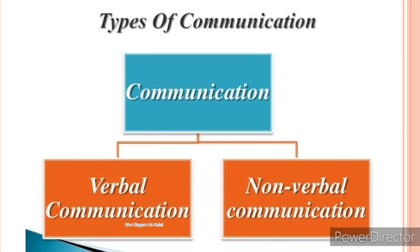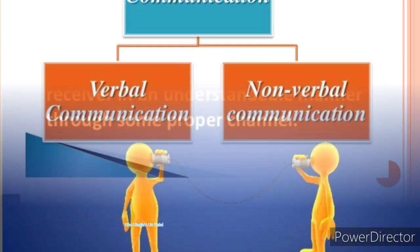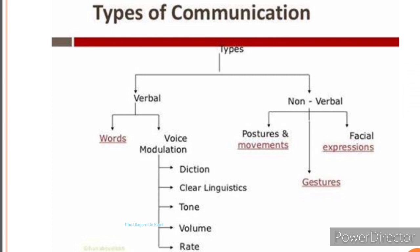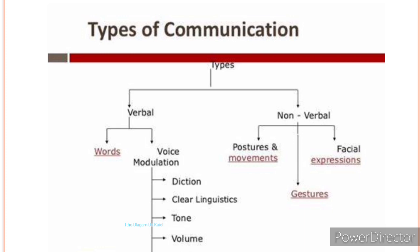Communication occurs in two different types: verbal communication and nonverbal communication. Verbal communication occurs through the medium of spoken or written form. Some examples of verbal communication include spoken communication, written communication, telecommunication, and electronic communication.